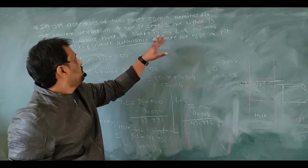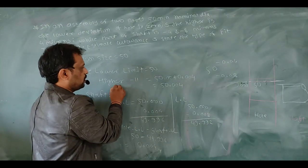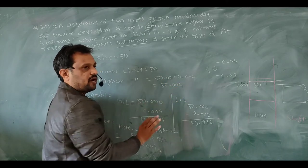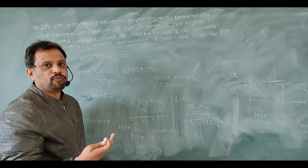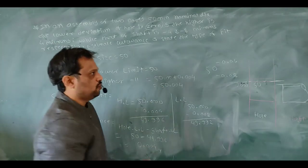Then the higher limit is 4 microns. For calculating the higher limit of hole, write 50mm plus 0.004. I am adding 4 microns to 50mm, so the higher limit of hole is 50.004mm.